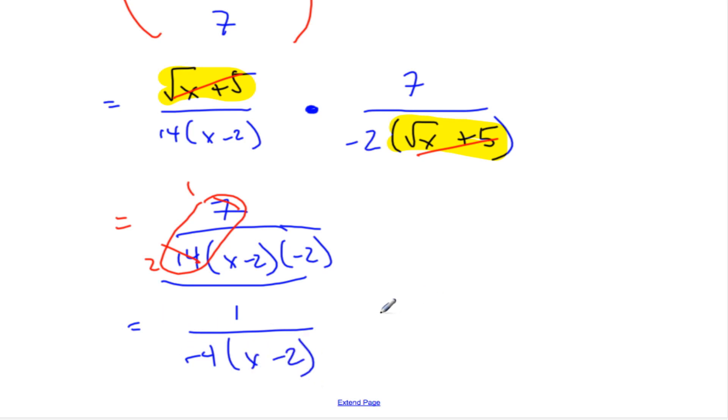And that, so I could write, that negative sign could also be written as negative 1 over 4 for x minus 2. Or you could even go 1 for x minus 2 and put it kind of in front of the fraction. All those three are the same things. Any one is correct to put as the final answer.